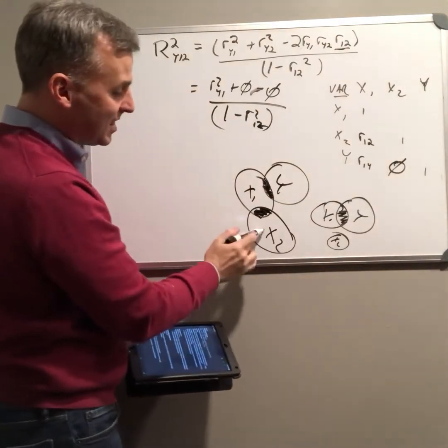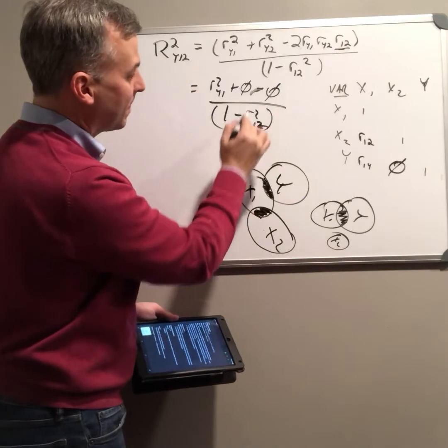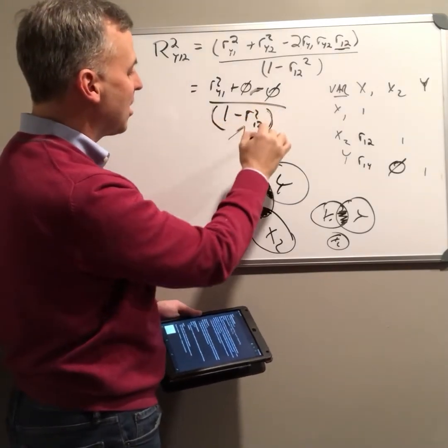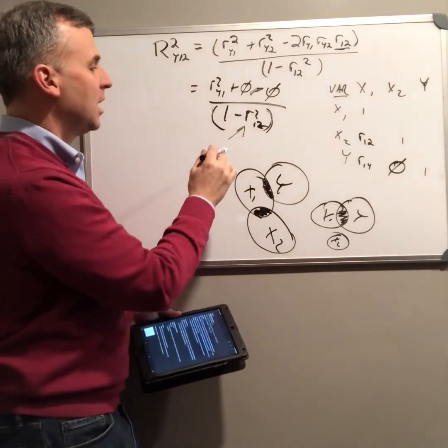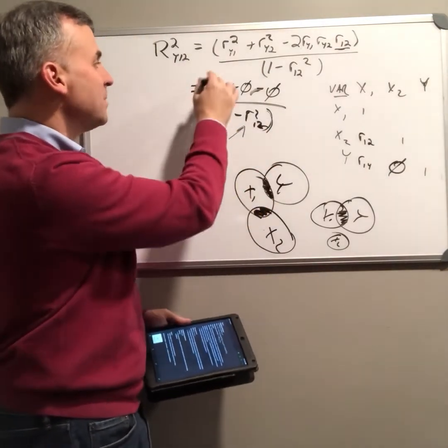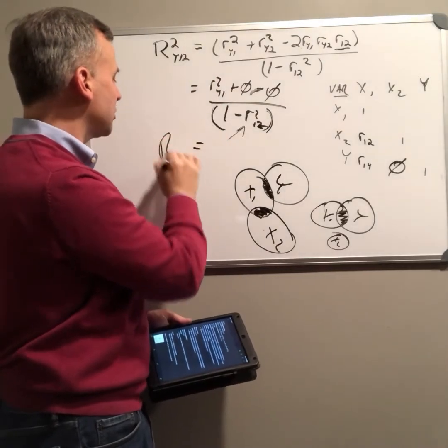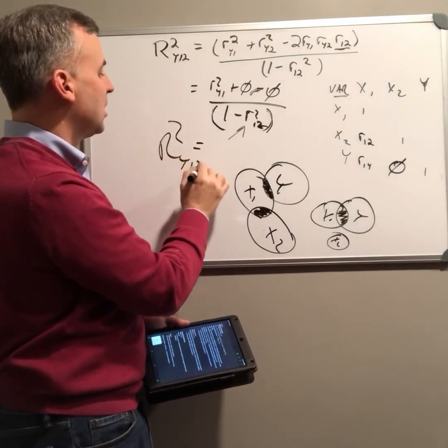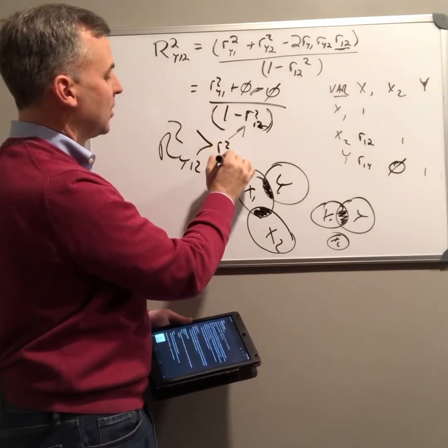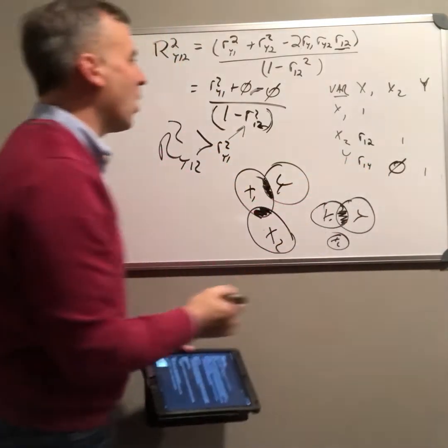But now, in this case, this has a value that's not 0, which means that this whole value is going to be something else. It's actually going to be less than 1, which means that the equation r squared here is going to be greater than the correlation between 1 and y.